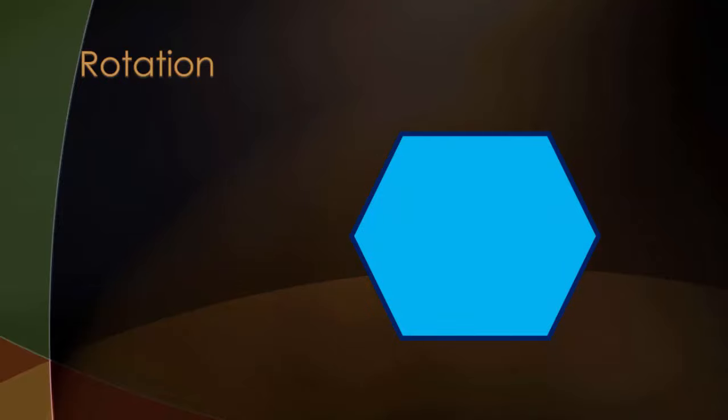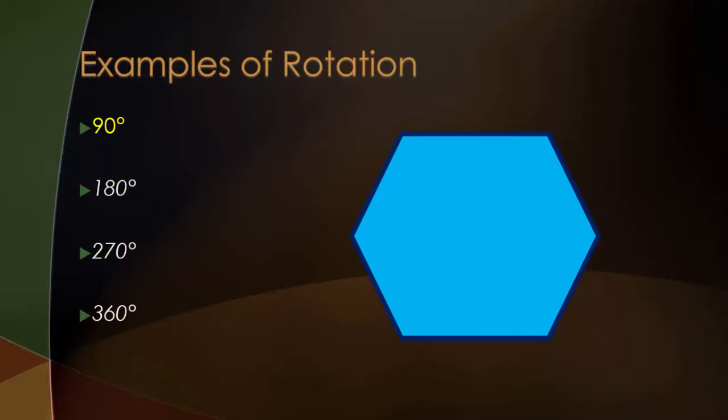The final transformation this video is going to go over are rotations. That is, being able to rotate an object, and how do you do so mathematically? There are four general degree measurements of rotations. You have the 90 degree rotation, the 180 degree rotation, the 270 degree rotation, and finally you have the 360 degree rotation.